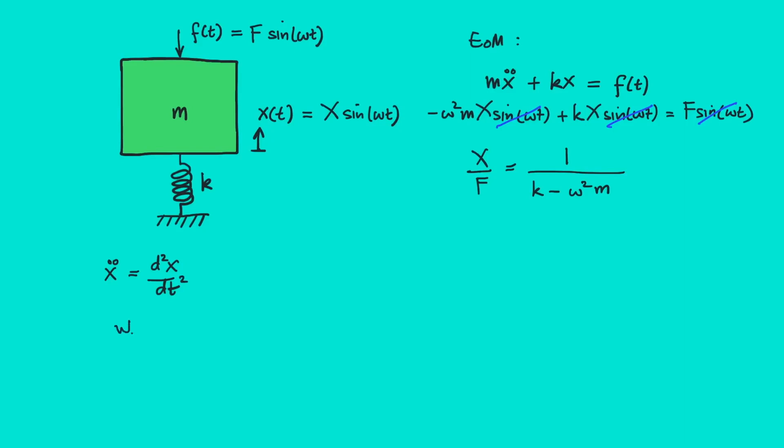Remember that the natural frequency is ωₙ equals square root of k over m. We can divide the numerator and denominator by k. So we have 1/k over (k/k - ω²m/k).